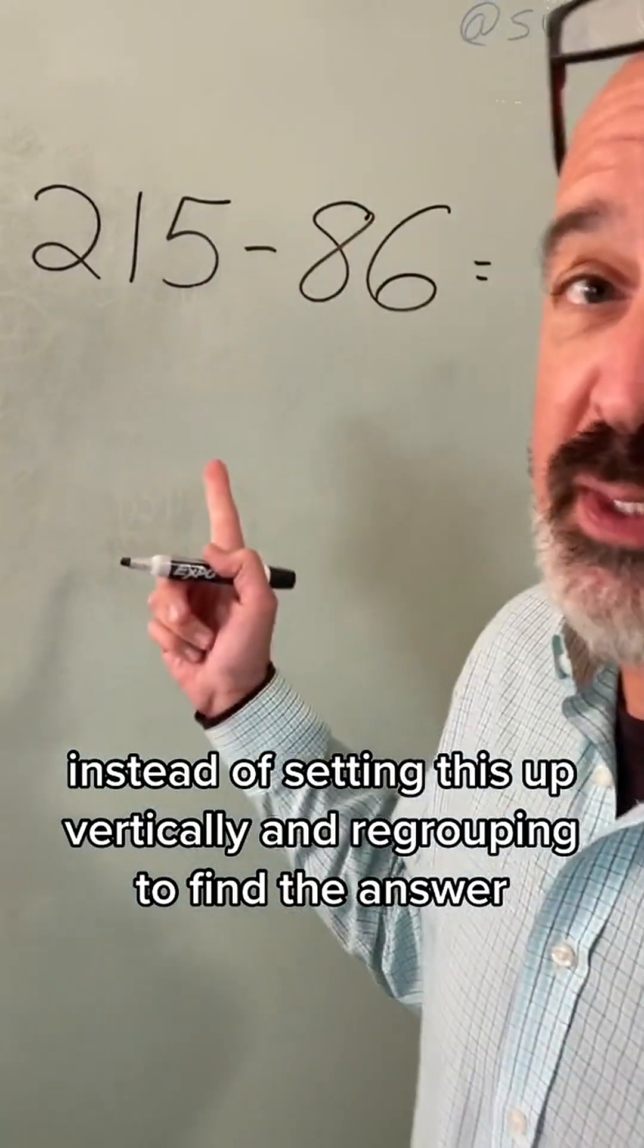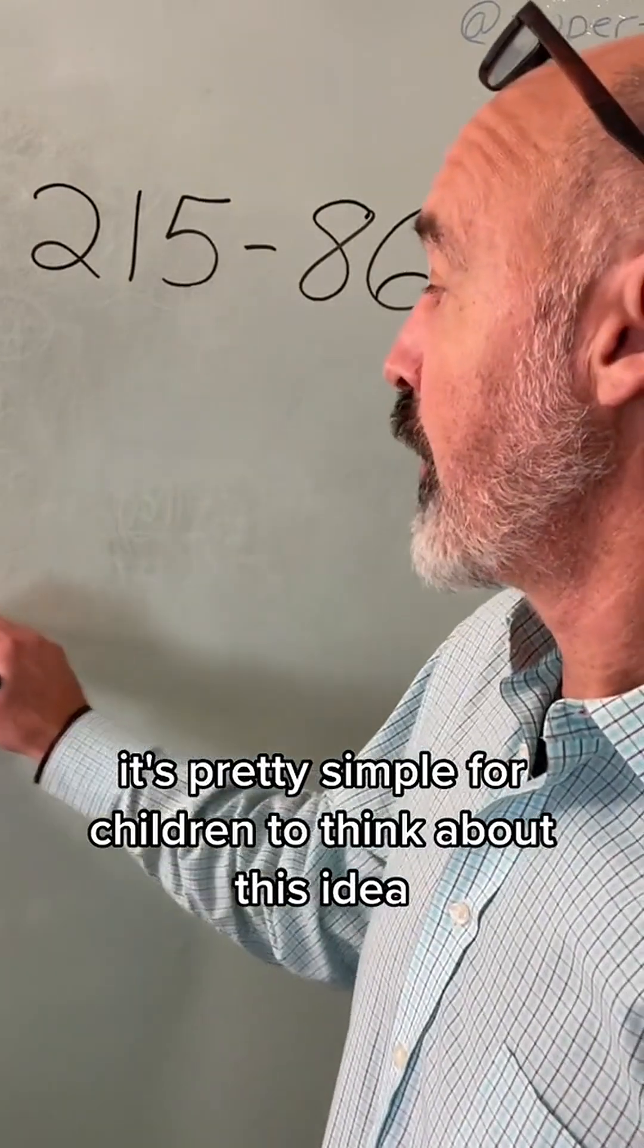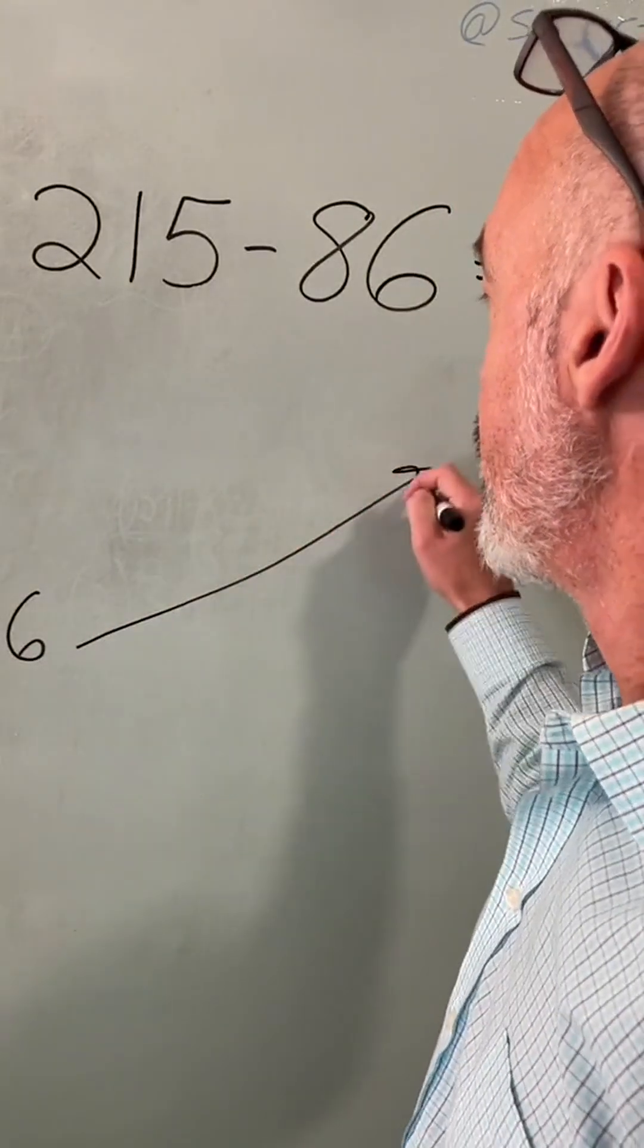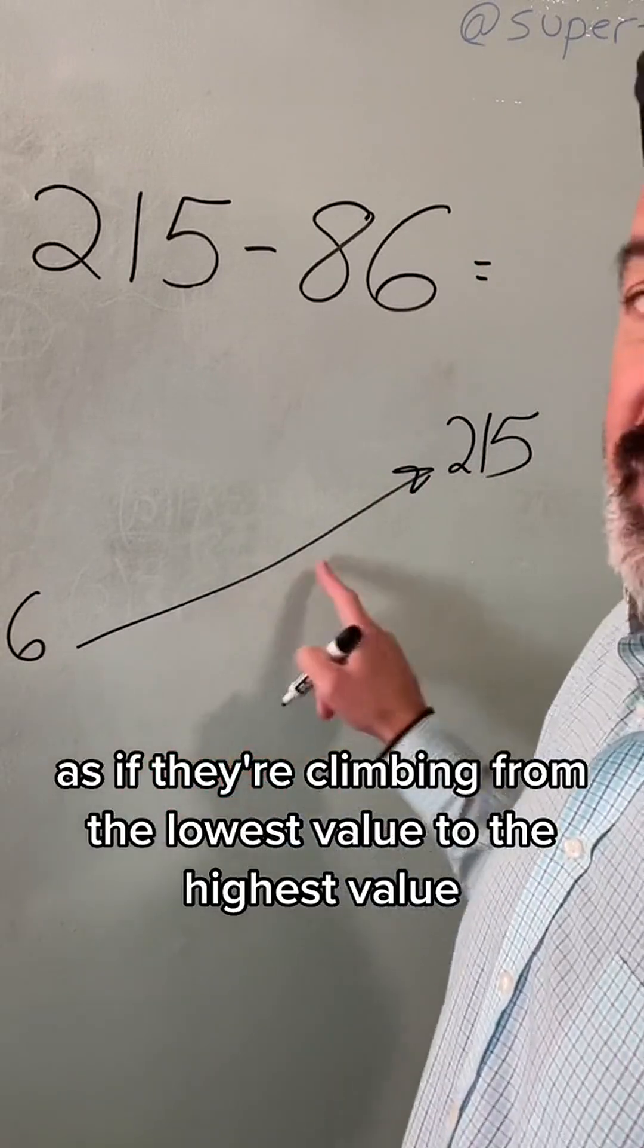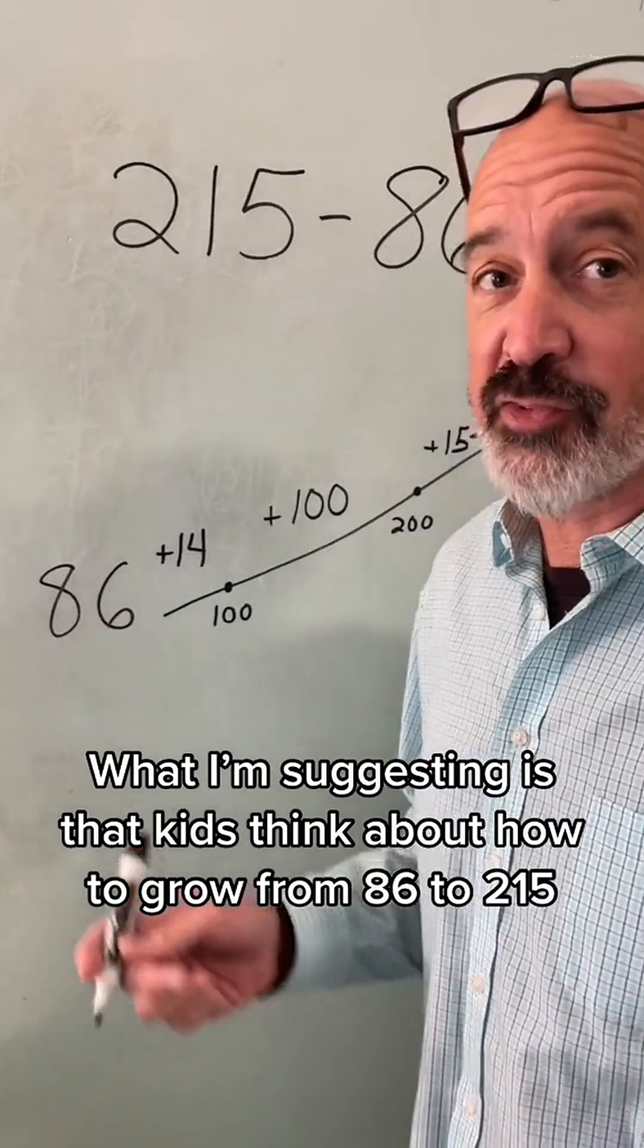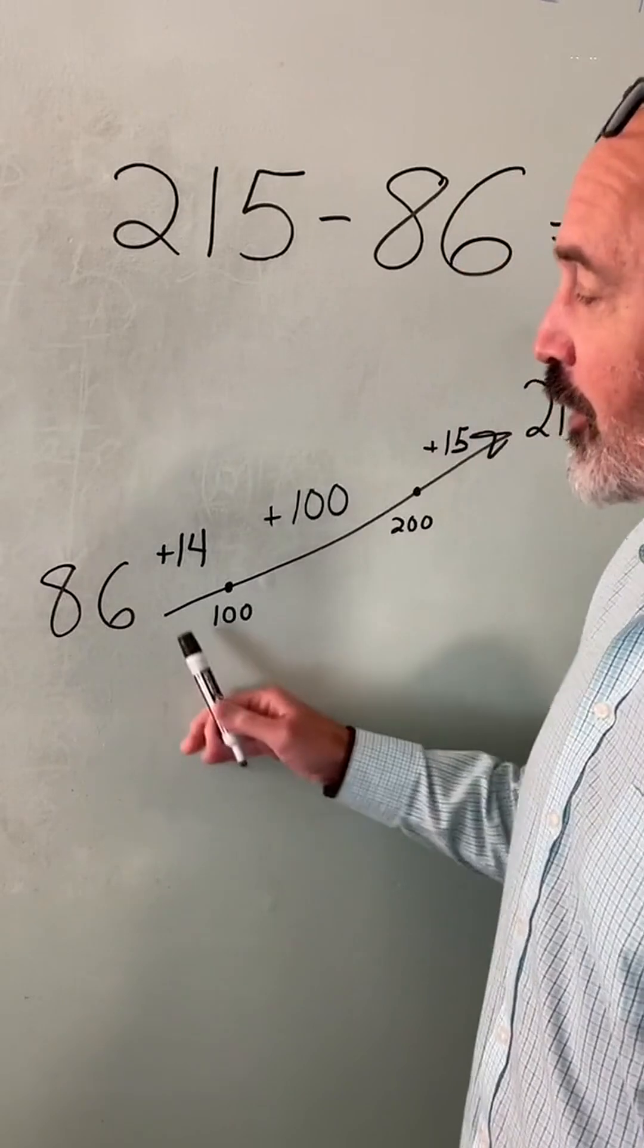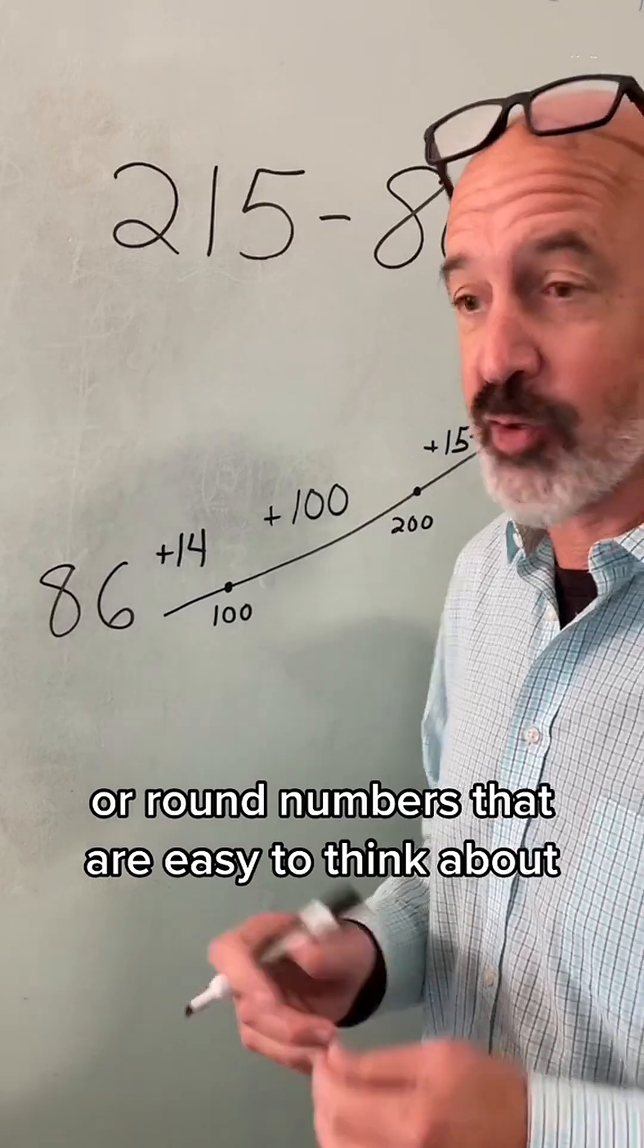Instead of setting this up vertically and regrouping to find the answer, it's pretty simple for children to think about finding the difference as if they're climbing from the lowest value to the highest value. What I'm suggesting is that kids think about how to grow from 86 to 215 by finding these friendly numbers or round numbers that are easy to think about.